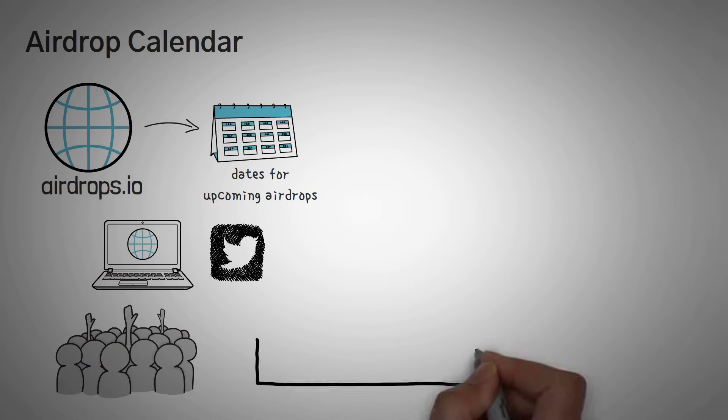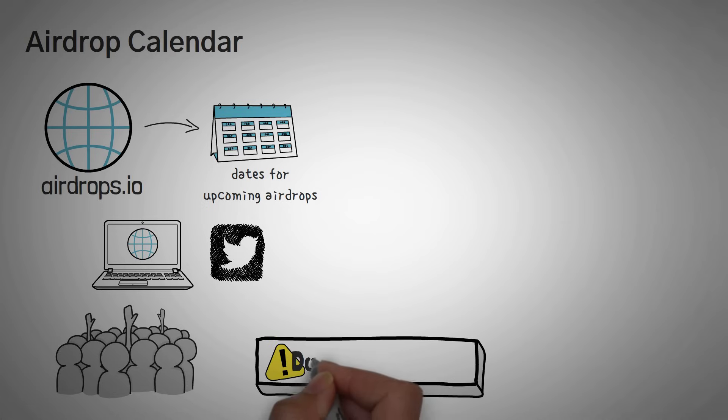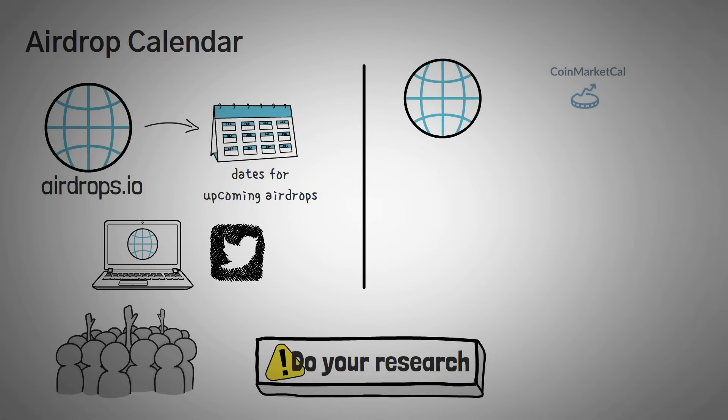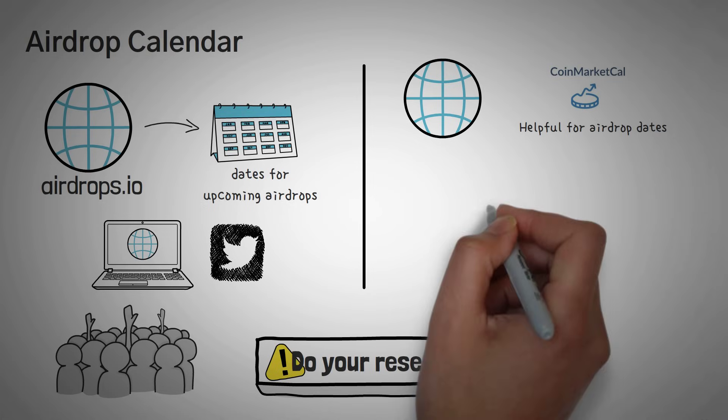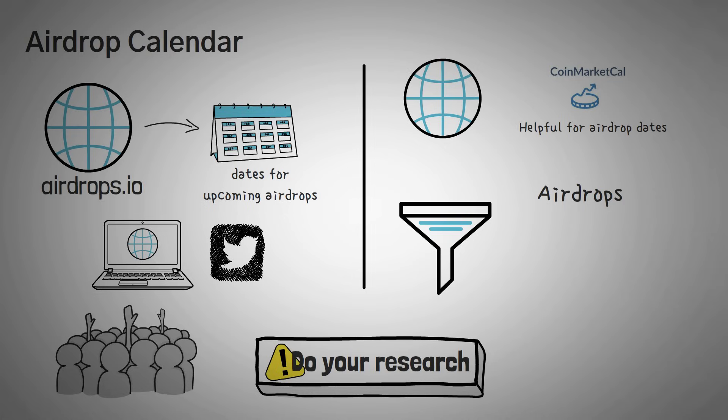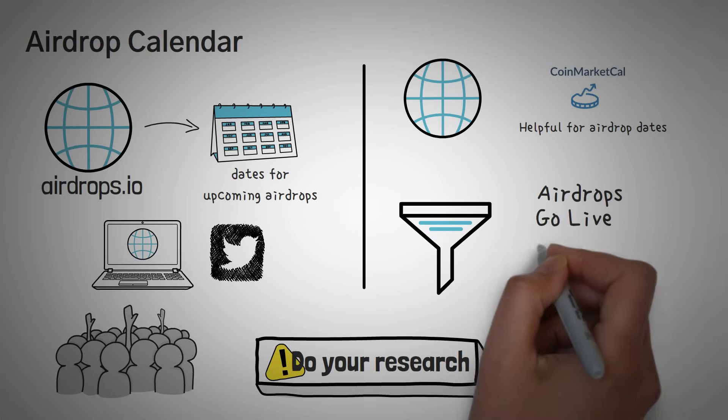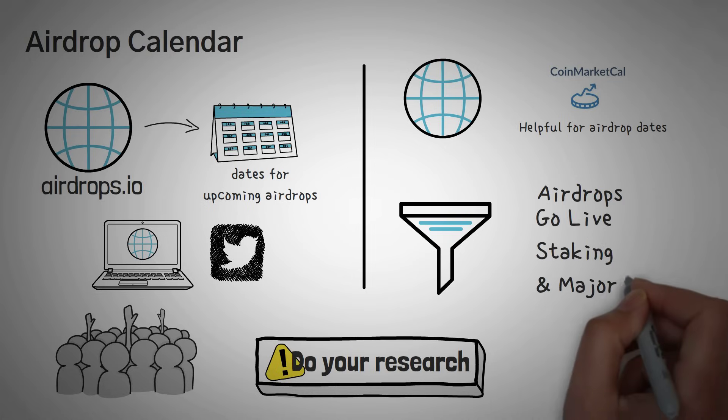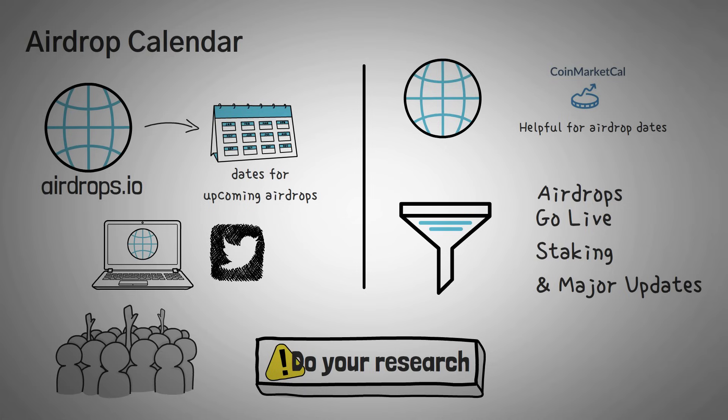We do want to say you should definitely research any project or token that you plan on investing in or getting for free. Another website is CoinMarketCal, which we haven't mentioned on the channel yet. This tool is very helpful. You can sort projects by airdrops, but they actually have other interesting dates, such as when certain coins will go live, when they start allowing staking, and major updates. This is a very useful tool for anyone wanting to do research on new coins or even developed coins.